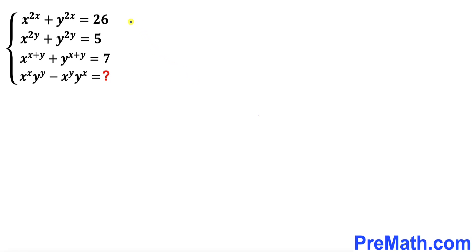Welcome to pre-math. In this video we have got this system of equations: x^(2x) + y^(2x) = 26, x^(2y) + y^(2y) = 5, and x^(x+y) + y^(x+y) = 7. We are going to find the value of x^x × y^y − x^y × y^x.